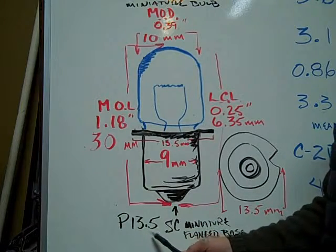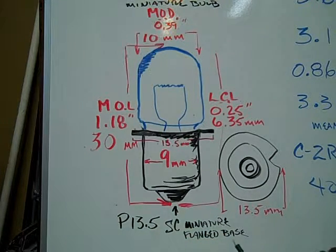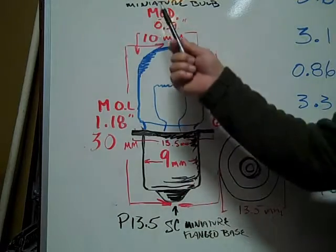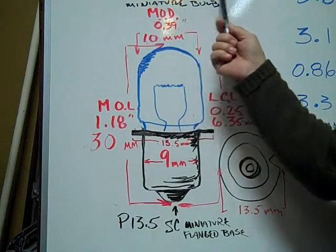The P13.5 single contact miniature flanged base bulb is a T3.25 Xenon.